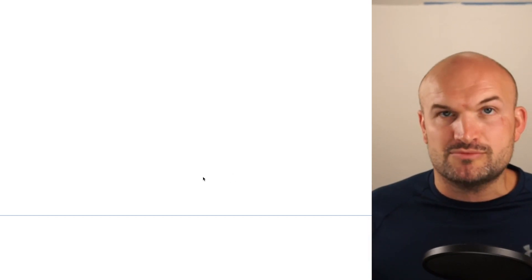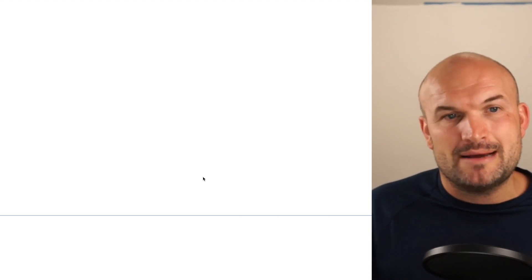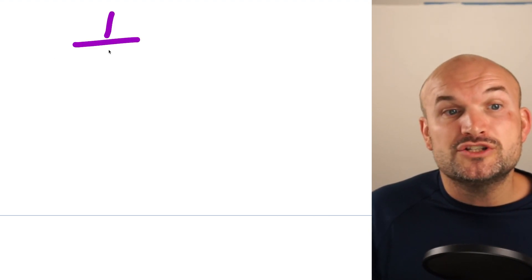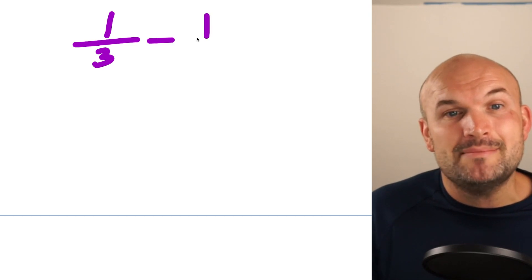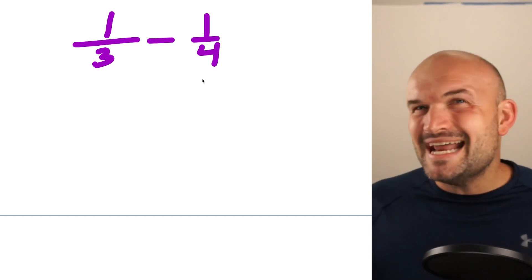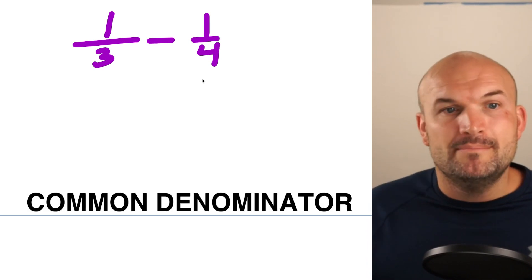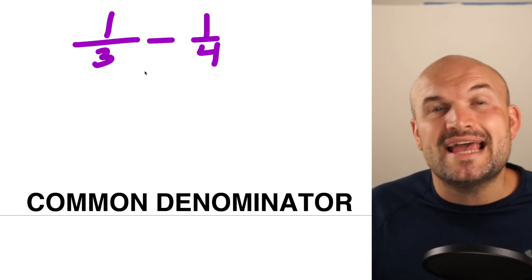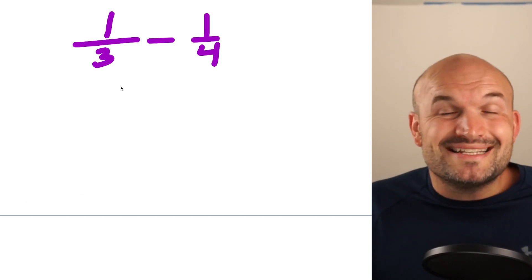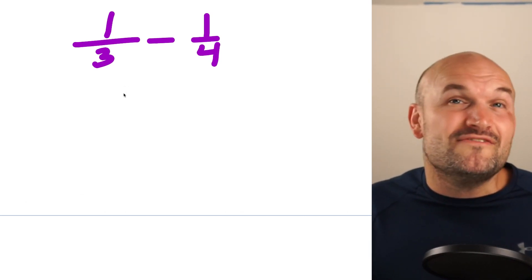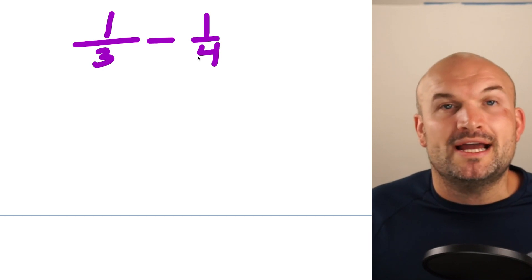The next example gets to the one where things usually get pretty confusing for students. When we have common denominators, everything is pretty easy — you apply addition or subtraction to the numerators and keep the denominator the same. But once we have two fractions that do not have common denominators, all of that is thrown out the window, meaning we have to find a common denominator because we cannot add or subtract fractions unless they have a common denominator. The easiest and fastest way to find the common denominator is to multiply our two denominators.